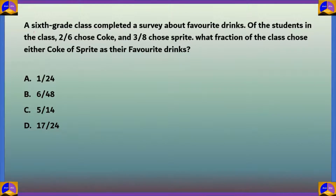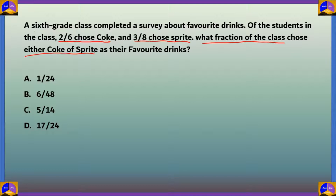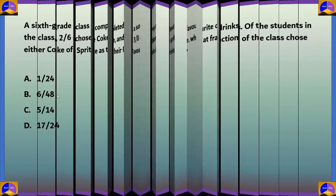Next question: A sixth grade class completed a survey about favorite drinks. 2/6 of the class chose Coke and 3/8 chose Sprite. What fraction of the class chose either Coke or Sprite as their favorite drink? Option A: 1/24. Option B: 6/48. Option C: 5/14. Option D: 17/24.